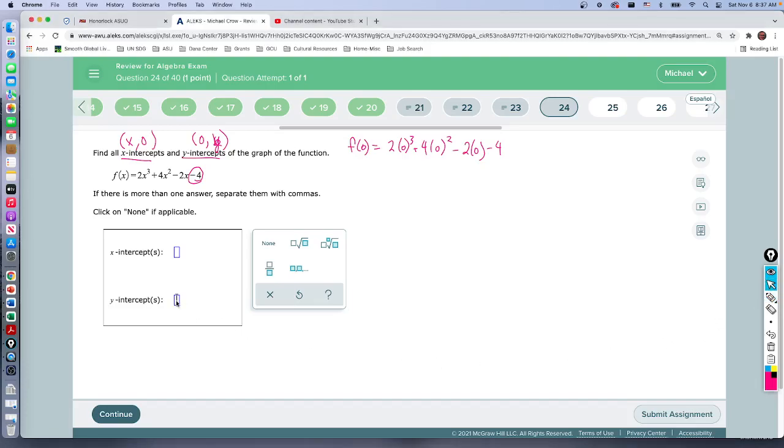To find the x-intercepts now that's a little different story where y is zero. So what we end up doing is we have it set up that this answer is zero. Zero equals two x to the third plus four x squared minus two x minus four.